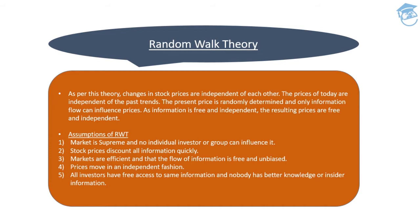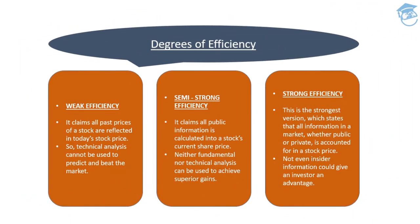That was all about Random Walk Theory. Let's move to the next topic: Degrees of Efficiency. In the market there are three different scenarios — weak efficiency form, semi-strong efficiency form, and strong efficiency form.